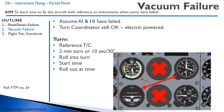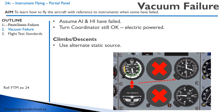For climbs and descents, remember you can use your alternate static source if needed. You're going to look at the airspeed indicator to figure out your pitch attitude, and use the turn coordinator to keep your wings level, then every so often look at your altimeter.